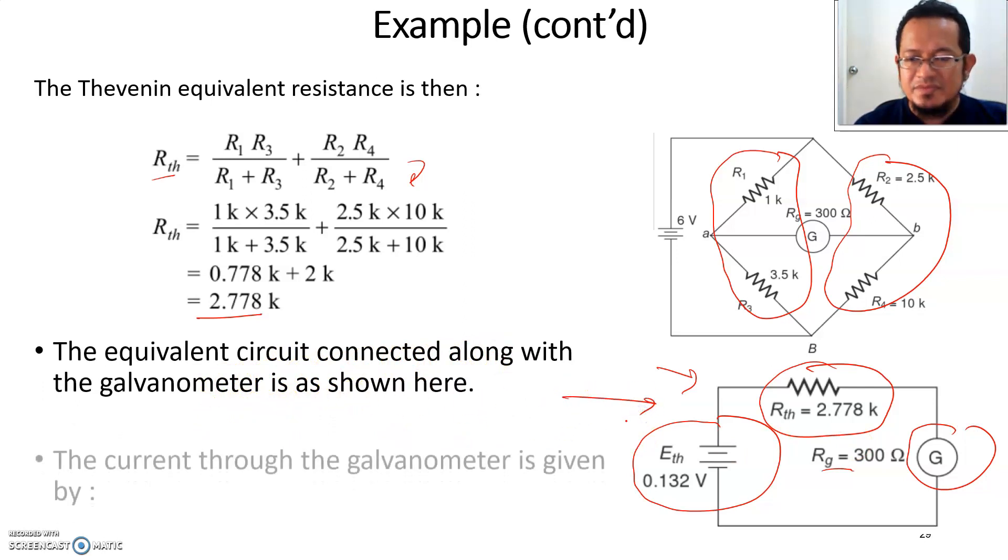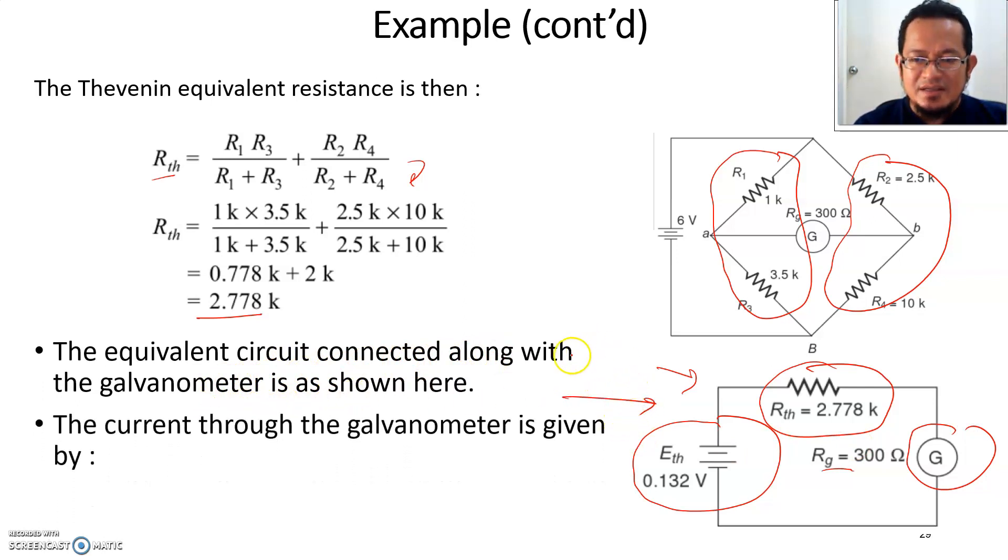The equivalent circuit connected along with the galvanometer is shown here. Finally, you can calculate the current flowing through the galvanometer, which is Ig. It equals the Thevenin voltage divided by the Thevenin resistance plus the galvanometer resistance. You plug in the numbers and you have the galvanometer current.